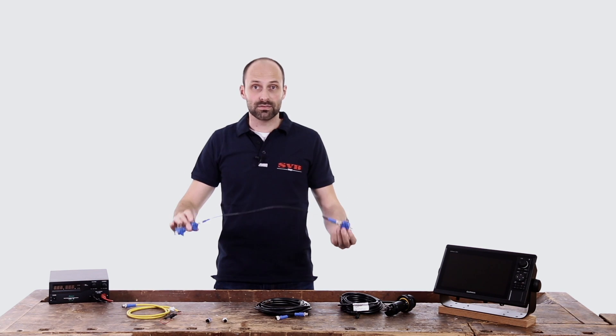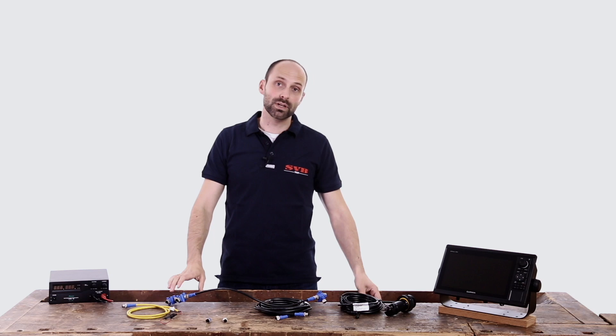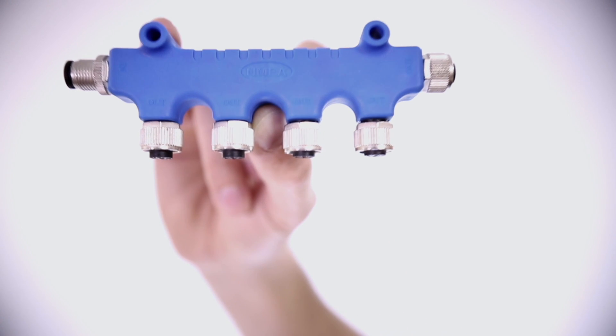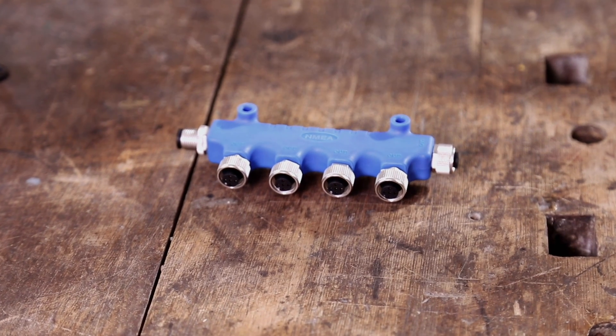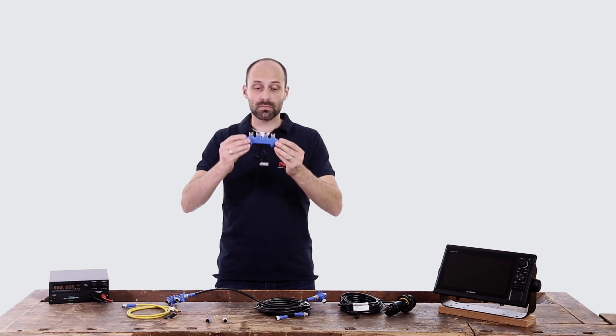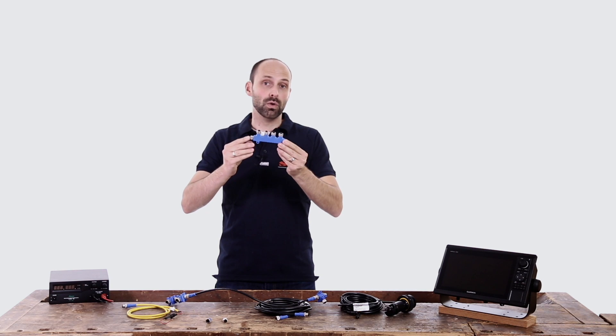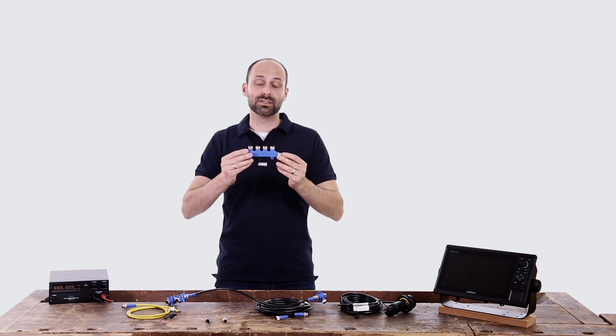Another way to extend the network is by using a so-called four-way splitter. This four-way splitter can be integrated into a network and with it up to three devices can be connected together and closed off or connected to an existing network.